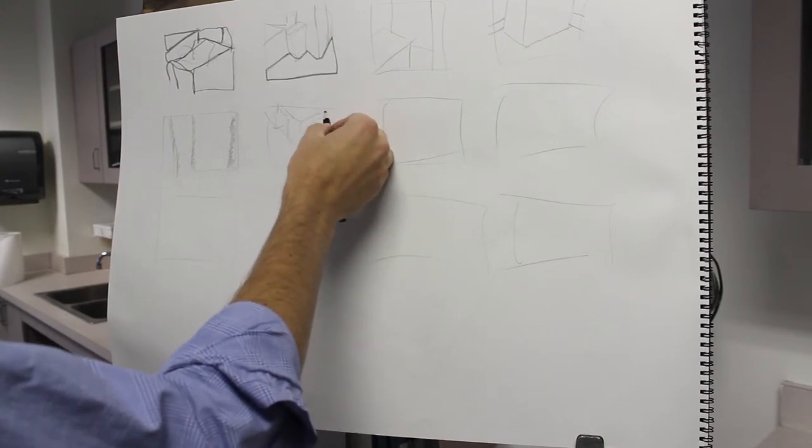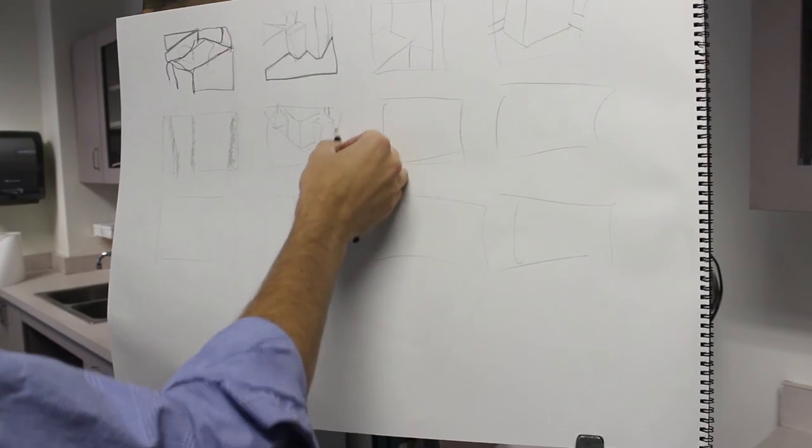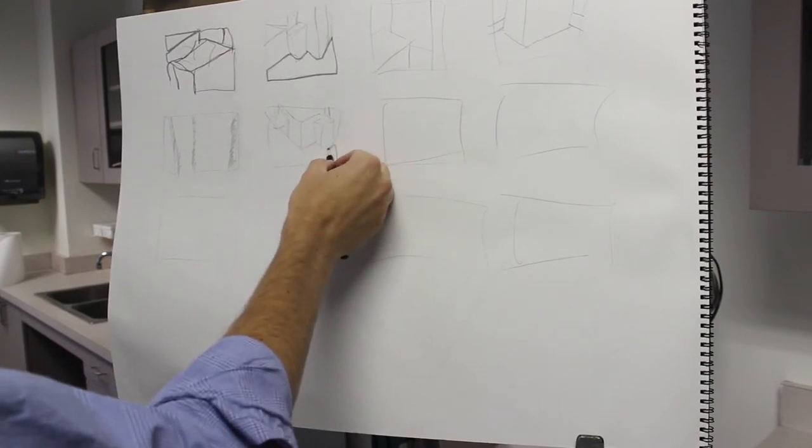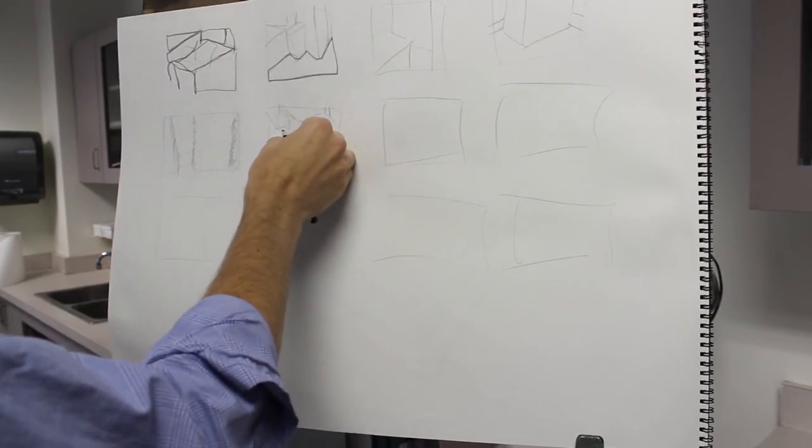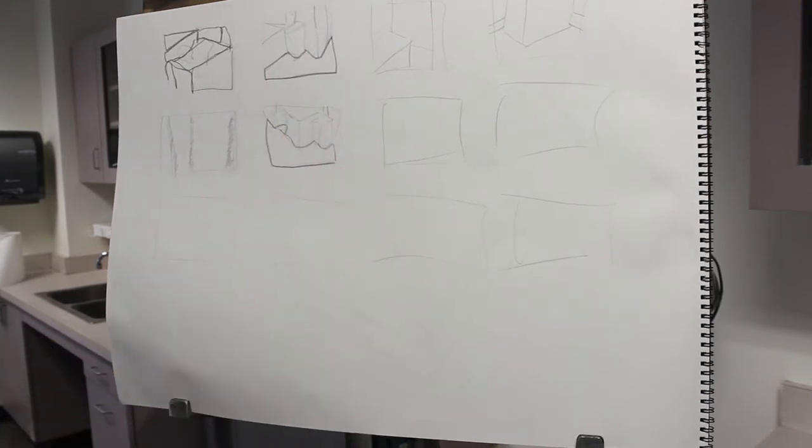So I have this huge empty zone now that I have to account for. Now I have this even bigger negative space. You see it?